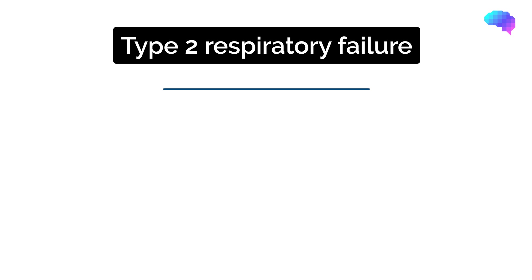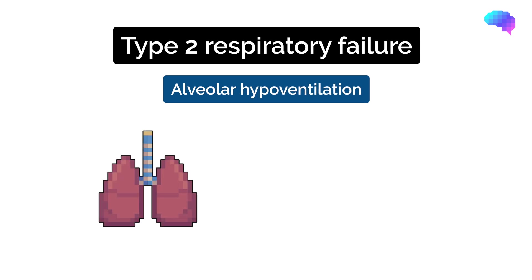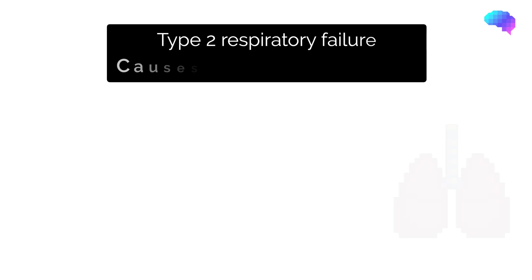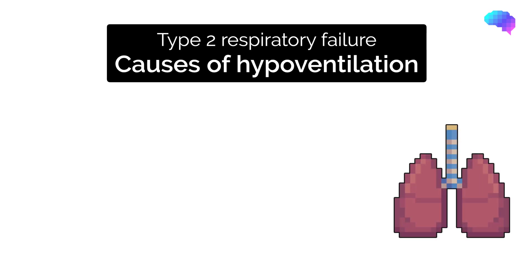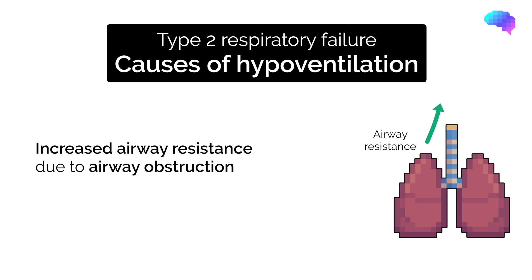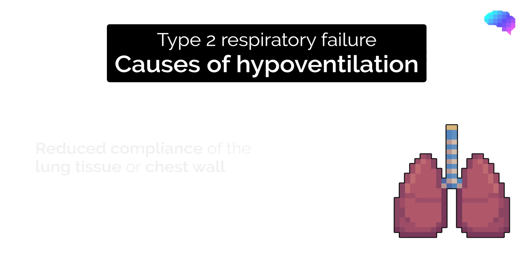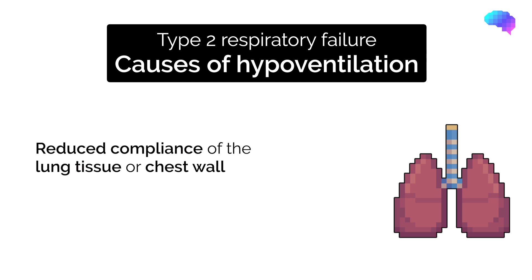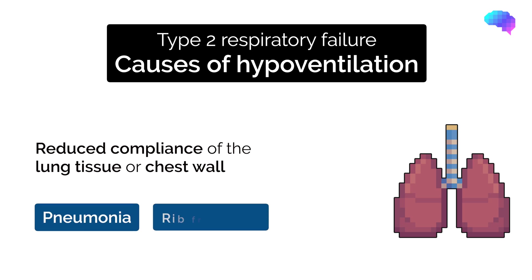Type 2 respiratory failure occurs as a result of alveolar hypoventilation, which prevents the patient from being able to adequately oxygenate and eliminate CO2 from their blood. Hypoventilation can occur for a number of reasons, including increased resistance as a result of airway obstruction — for example, COPD — and reduced compliance of the lung tissue or chest wall, for example, pneumonia, rib fractures, or obesity.